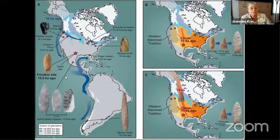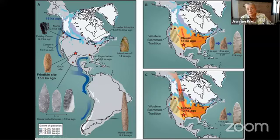Looking at the map on the right, we can see where Clovis points are found — all across the United States, into Mexico and up in Alaska. On the left map are pre-Clovis sites across North and South America.